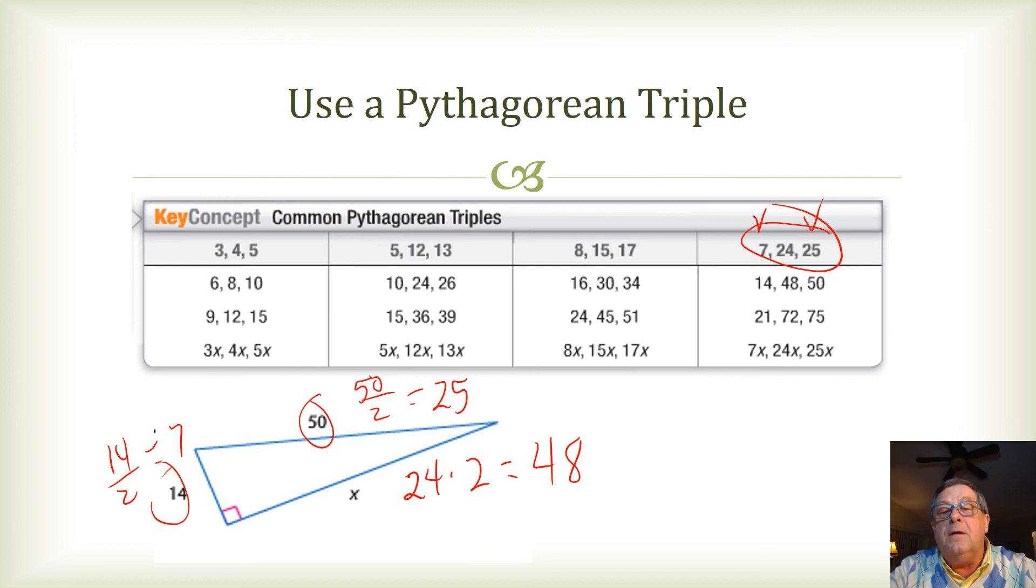5, 12, 13 works well. And then we've got 8, 15, 17, 7, 24, 25. These are the most common. I find the common multiple. And then I can apply it based upon which side of this right triangle we're dealing with. Pythagorean triples.